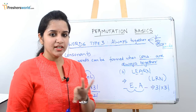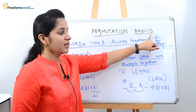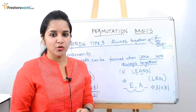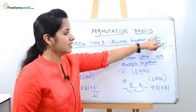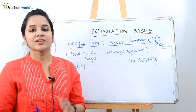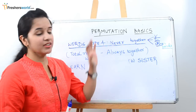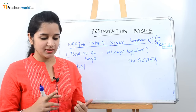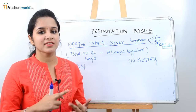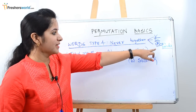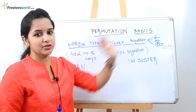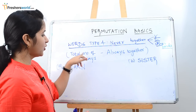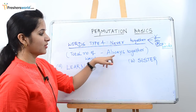So now we have dealt with three types of problems in always together: with vowels, consonants, and other words. The next topic we are going to deal with is never together — again with vowels, consonants, and other words. The concept for never together is: never together = total number of ways minus always together.